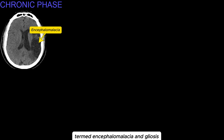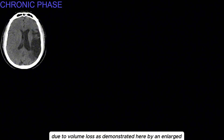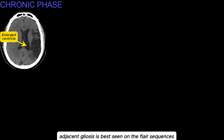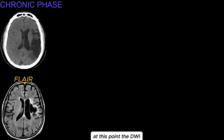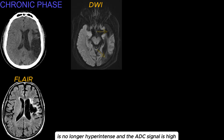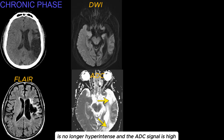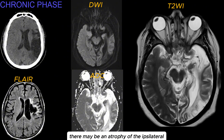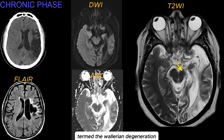In the chronic phase, the dead brain tissue has been removed by macrophages, leaving an empty space termed encephalomalacia and gliosis. Adjacent CSF spaces will become more prominent due to volume loss, as demonstrated here by a large left lateral ventricle. Adjacent gliosis is best seen on the FLAIR sequences. At this point, the DWI is no longer hyperintense and the ADC signal is high. If the infarct involved the corticospinal tract, there may be atrophy of the ipsilateral cerebral peduncle and pons, termed Wallerian degeneration.